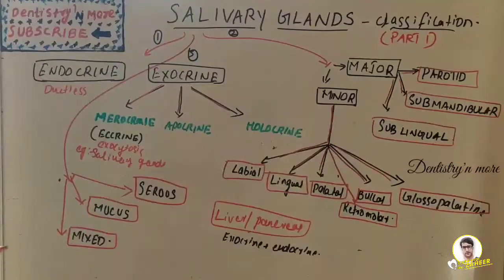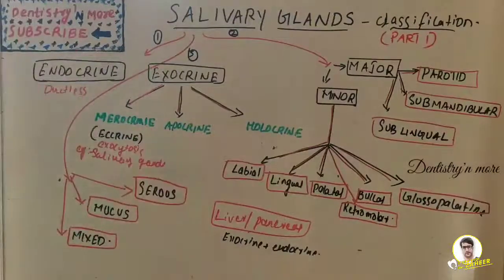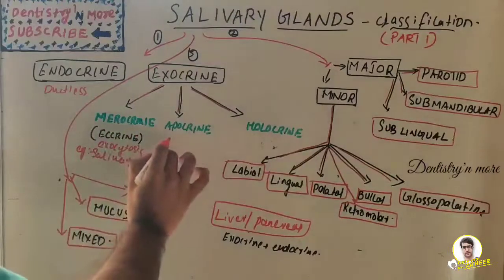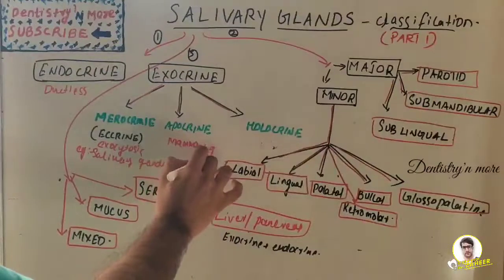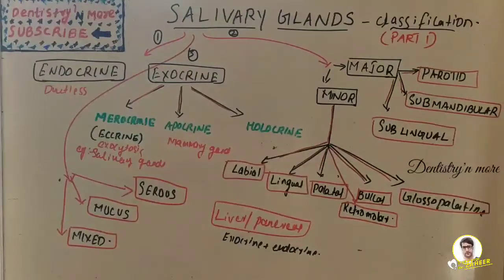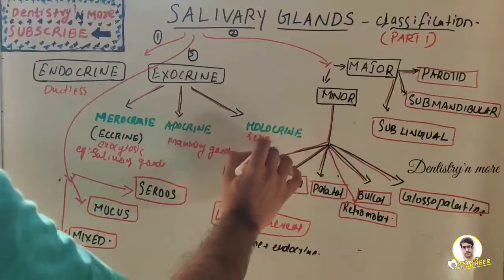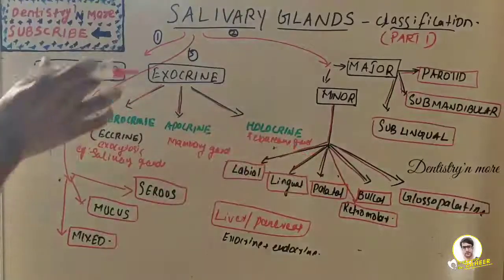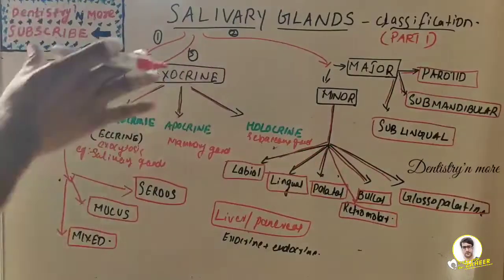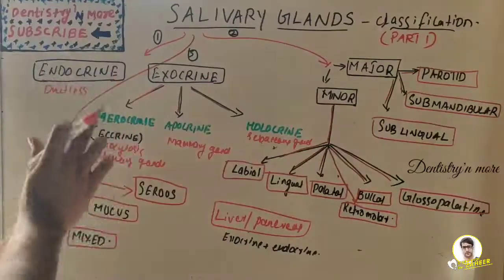Apocrine glands are those where a portion of the secreting cell's body is lost during secretion — just a portion. An example is mammary glands. Holocrine glands are those where the entire cell disintegrates to secrete its substance; an example is sebaceous glands. Both are classifications of exocrine glands because they have ducts.